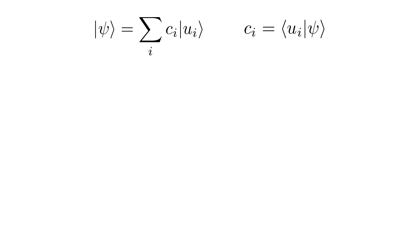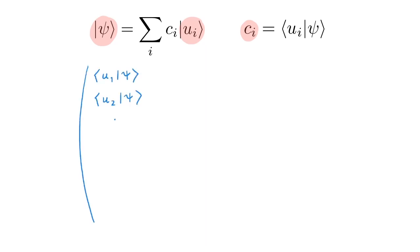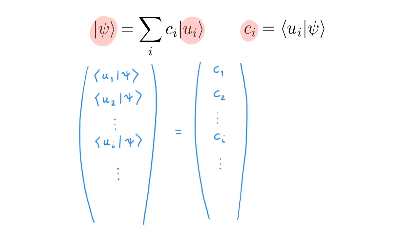To introduce the matrix formulation of quantum mechanics we start with kets. We expand the ket psi in a basis u where the expansion coefficients c are given by the bracket between u and psi. These c coefficients are what we call the representation of the ket psi in the u basis — if you need a refresher check out the video on representations. To define the matrix formulation of kets we arrange these coefficients into a column vector, either in terms of the brackets u|psi or directly in terms of the expansion coefficient c. Therefore in the matrix formulation of quantum mechanics, kets are written as column vectors.